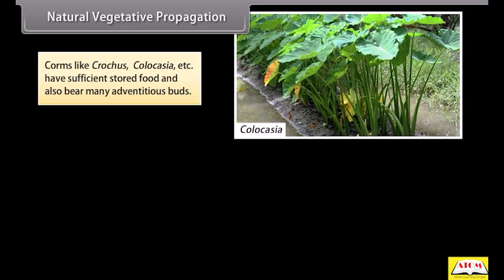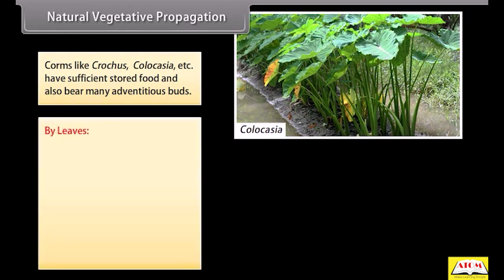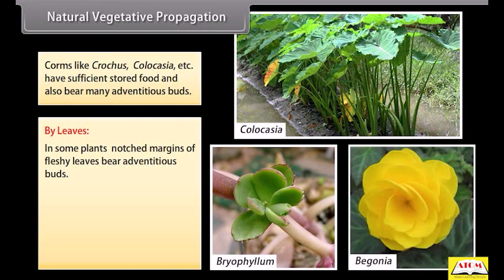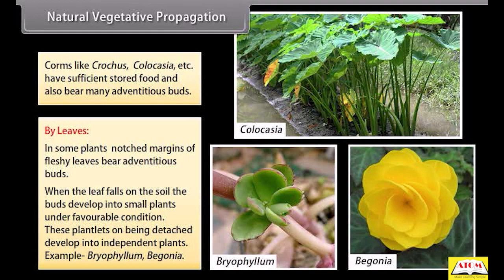Corms like crocus and Colocasia have sufficient stored food and also bear many adventitious buds. By leaves: in some plants, notched margins of fleshy leaves bear adventitious buds. When the leaf falls on the soil, the buds develop into small plants under favorable conditions. These plantlets, on being detached, develop into independent plants. Examples include Bryophyllum and Begonia.